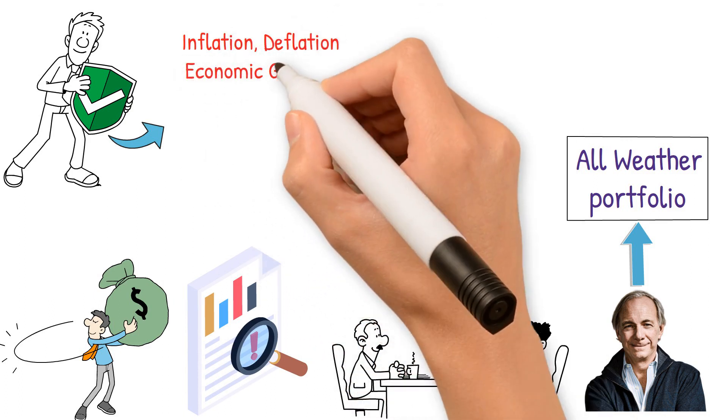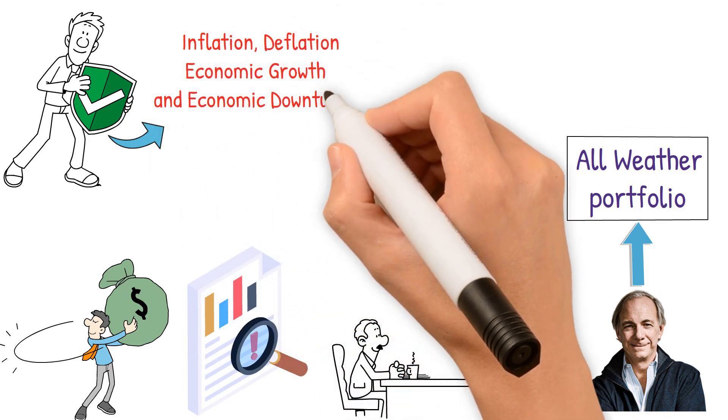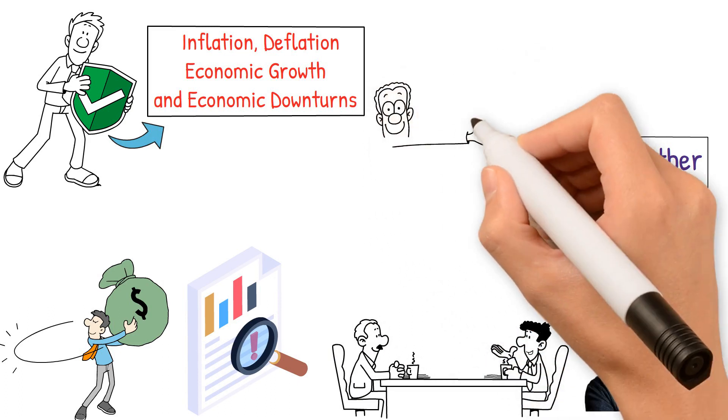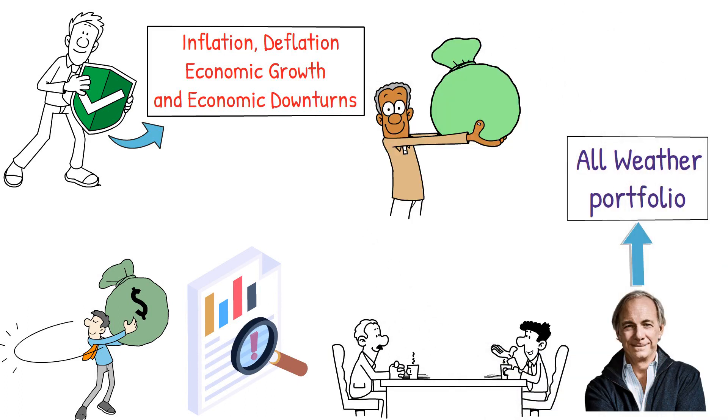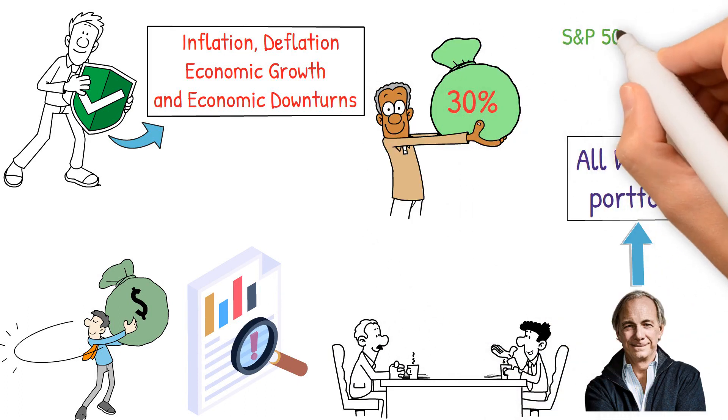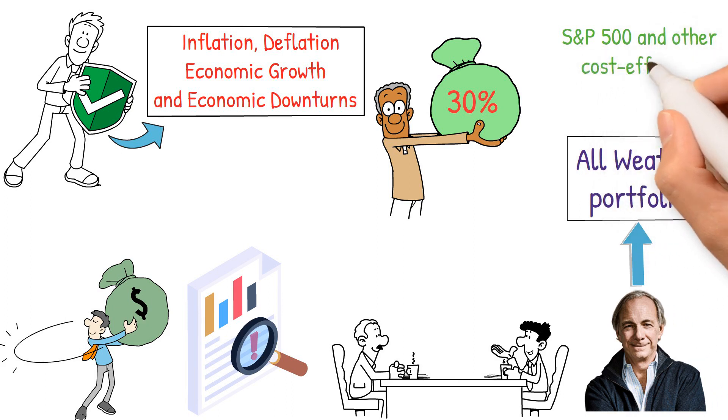Represented by inflation, deflation, economic growth, and economic downturns. Ray's advice leans towards allocating 30% of your funds in reliable stocks like those in the S&P 500 and other cost-effective index funds.